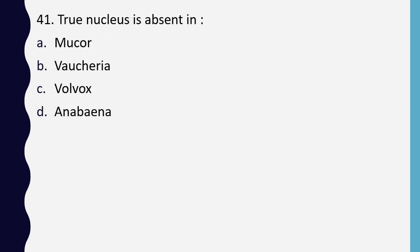Question 41. True nucleus is absent in: Mucor, Vaucheria, Volvox, or Anabaena. The correct answer is option D: Anabaena.